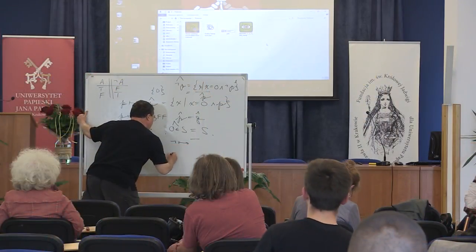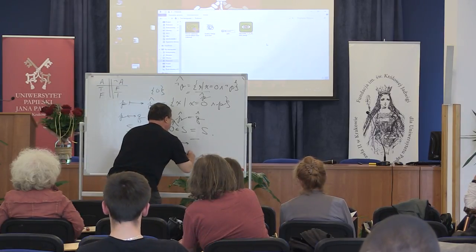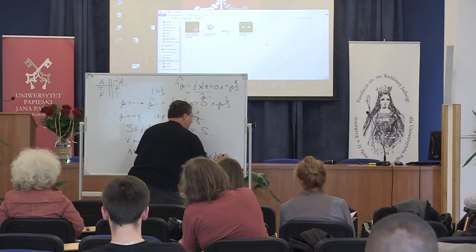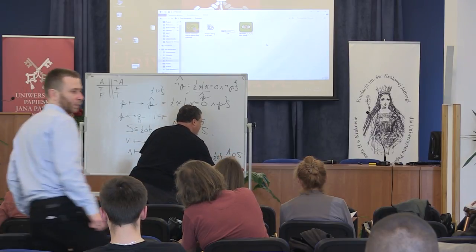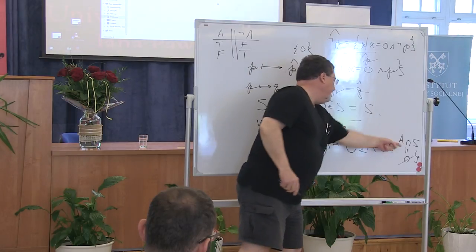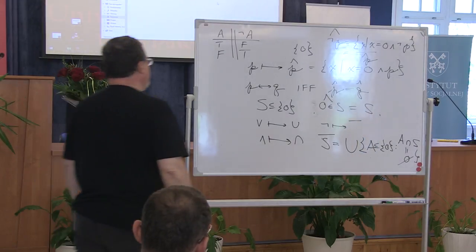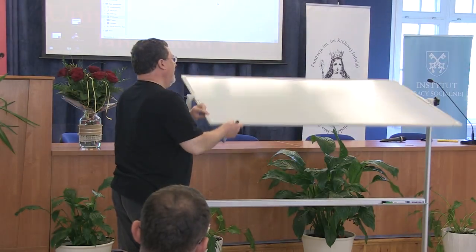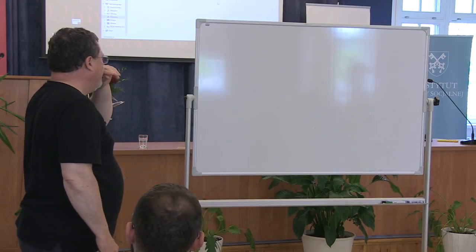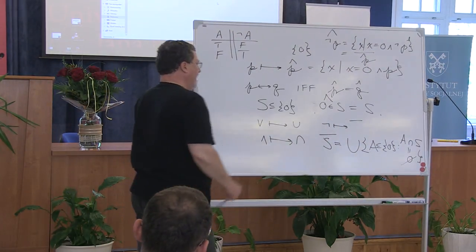If I take a look at any set S and I want to talk about its negation or complement, that's just the union of all A in that collection such that A intersection S gives me the empty set. This defines the negation or complement of S — it's just the largest thing in there that is disjoint from S. So negation can be defined as an operation on truth values.